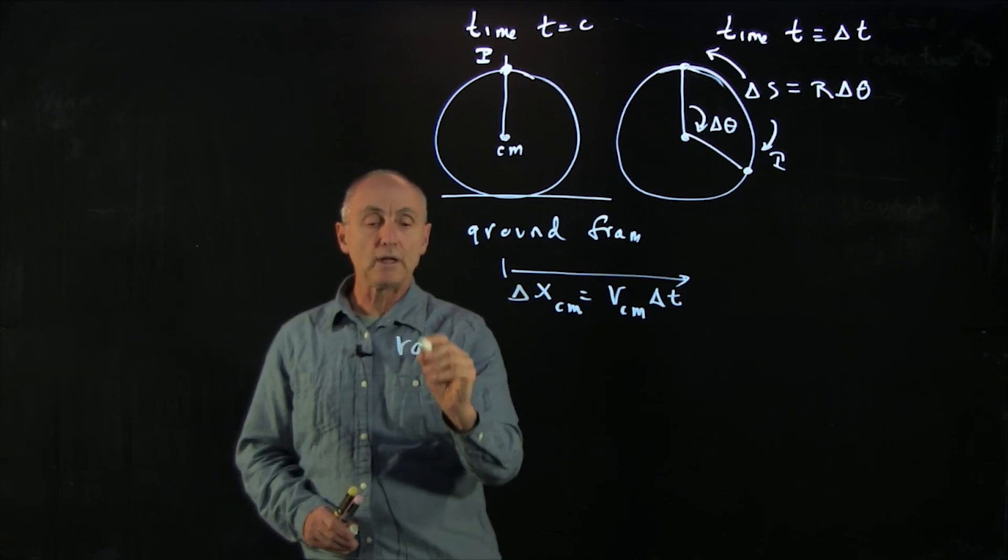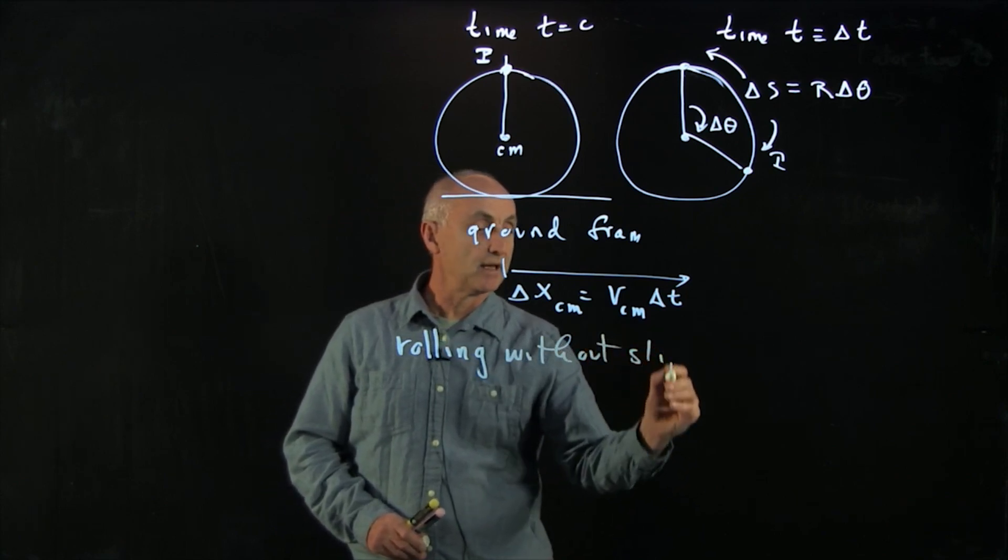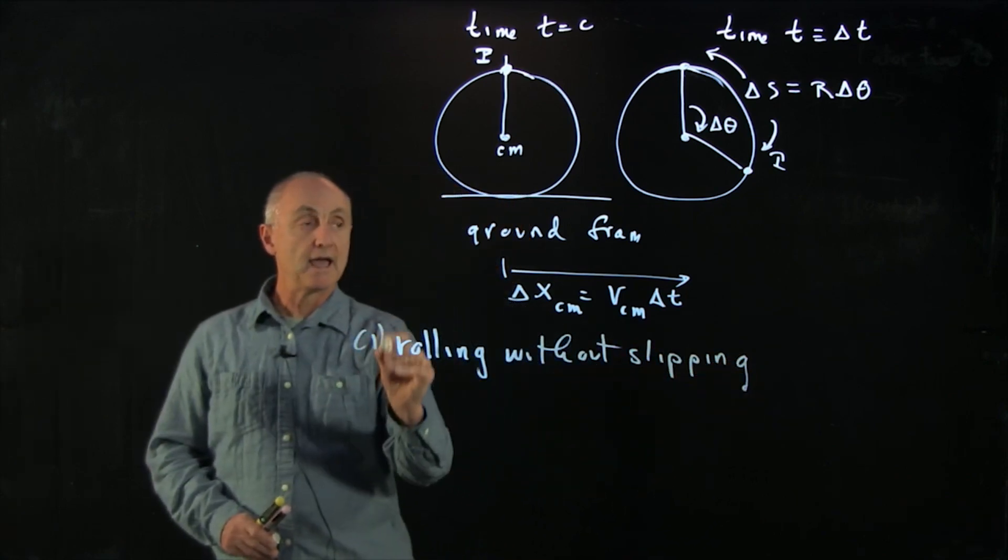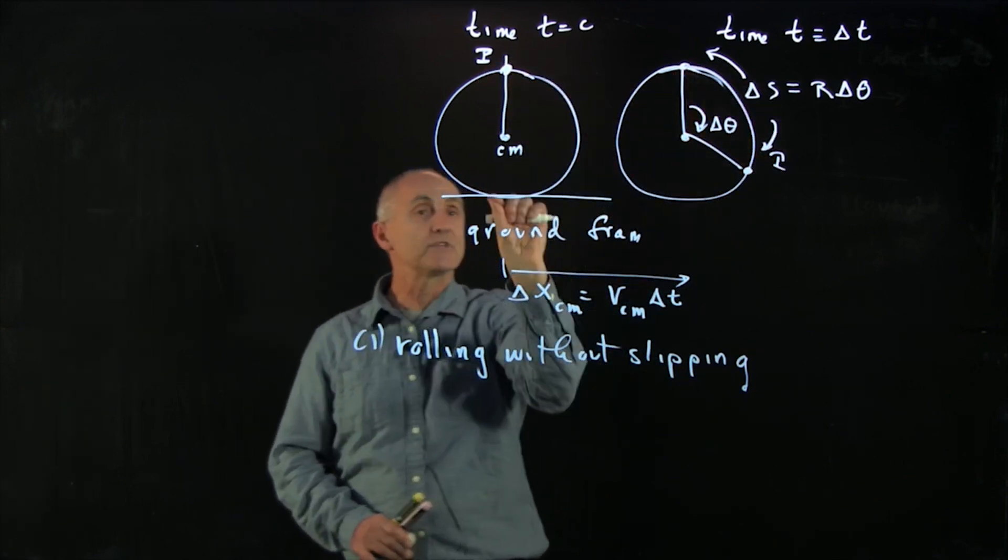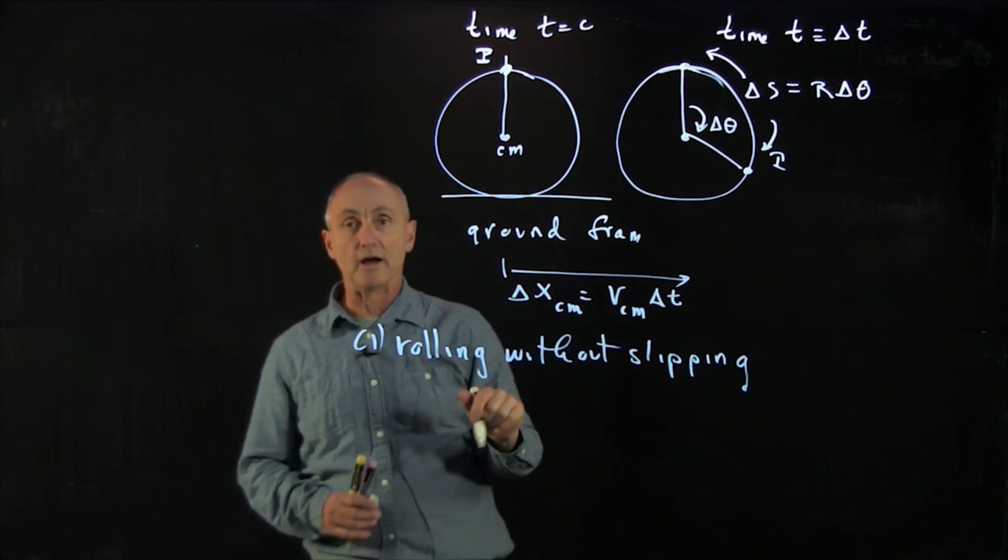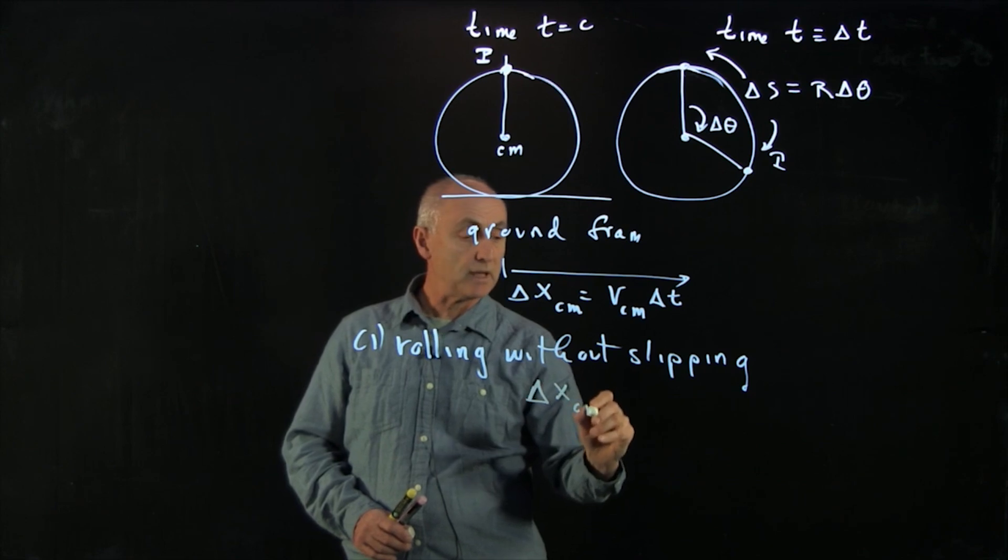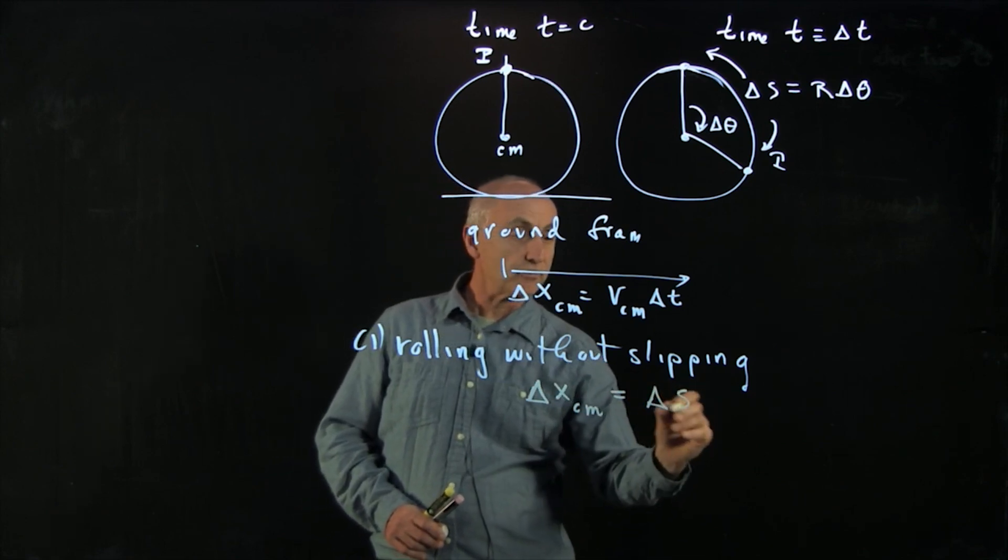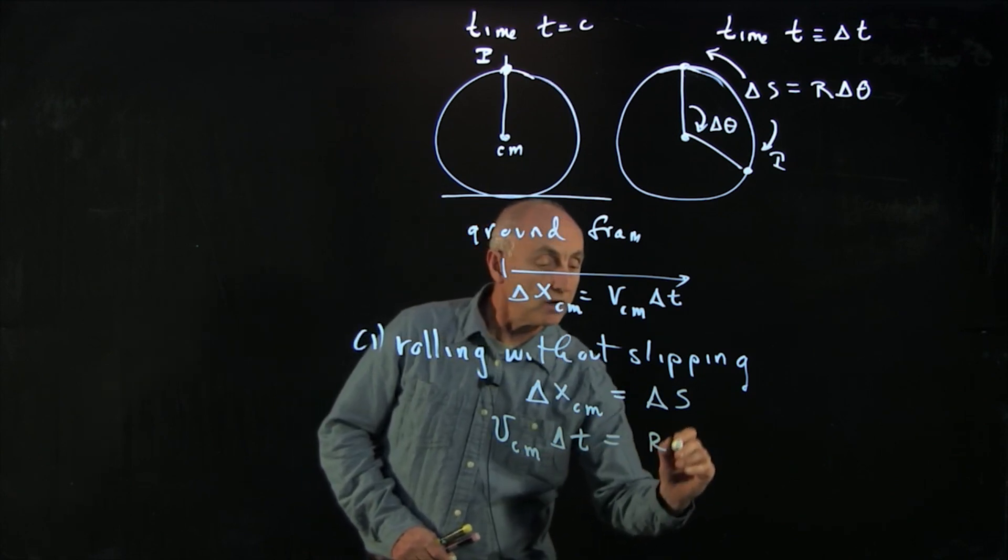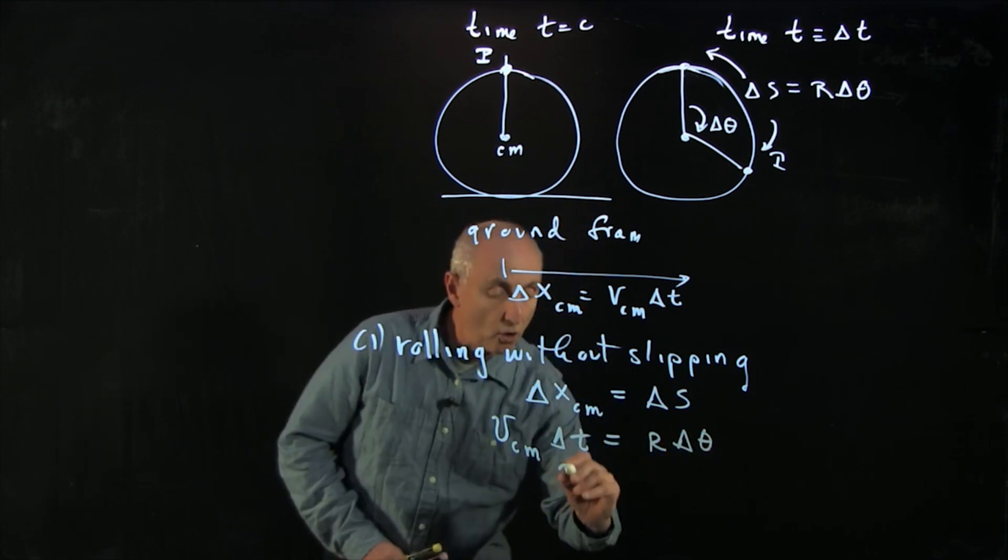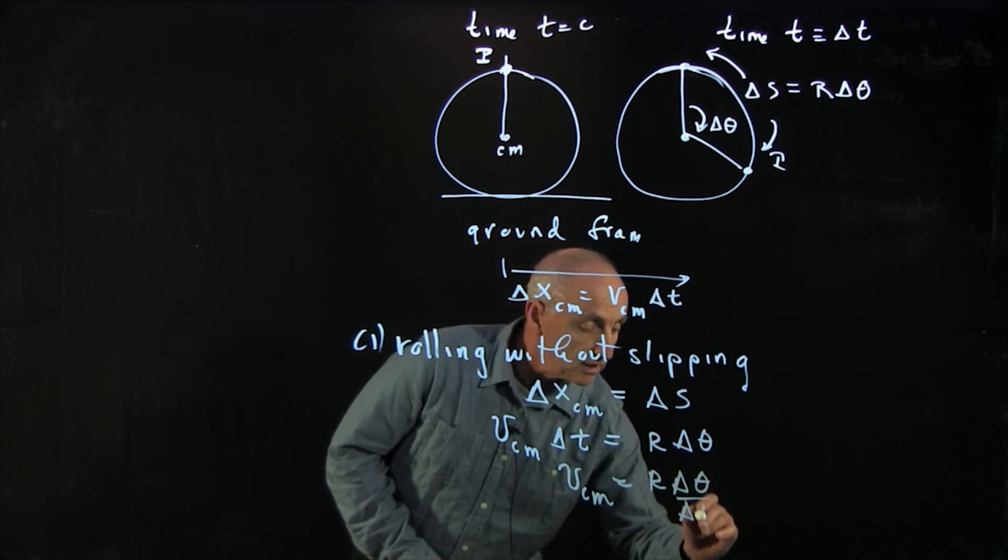We call rolling without slipping. That will be our first case. And that's the case when the arc length delta s is exactly equal to the distance along the ground. So we have delta x cm is delta s. And so we get v cm delta t equals r delta theta, or v cm equals r delta theta over delta t.